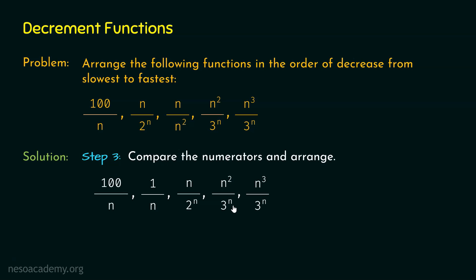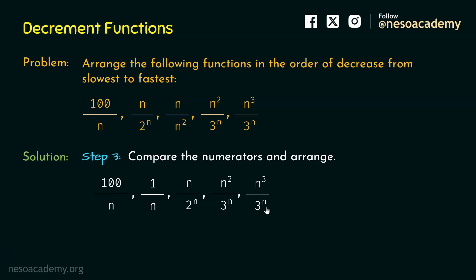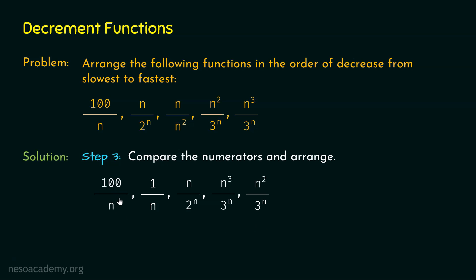Now comparing N²/3ⁿ and N³/3ⁿ: the denominators are the same but numerators differ. A greater numerator means a slower decrease. Since N² is less than N³, N²/3ⁿ has a greater decrease compared to N³/3ⁿ. Therefore N³/3ⁿ must be placed before N²/3ⁿ. After this arrangement, the final order is: 100/N, 1/N, N/2ⁿ, N³/3ⁿ, N²/3ⁿ.